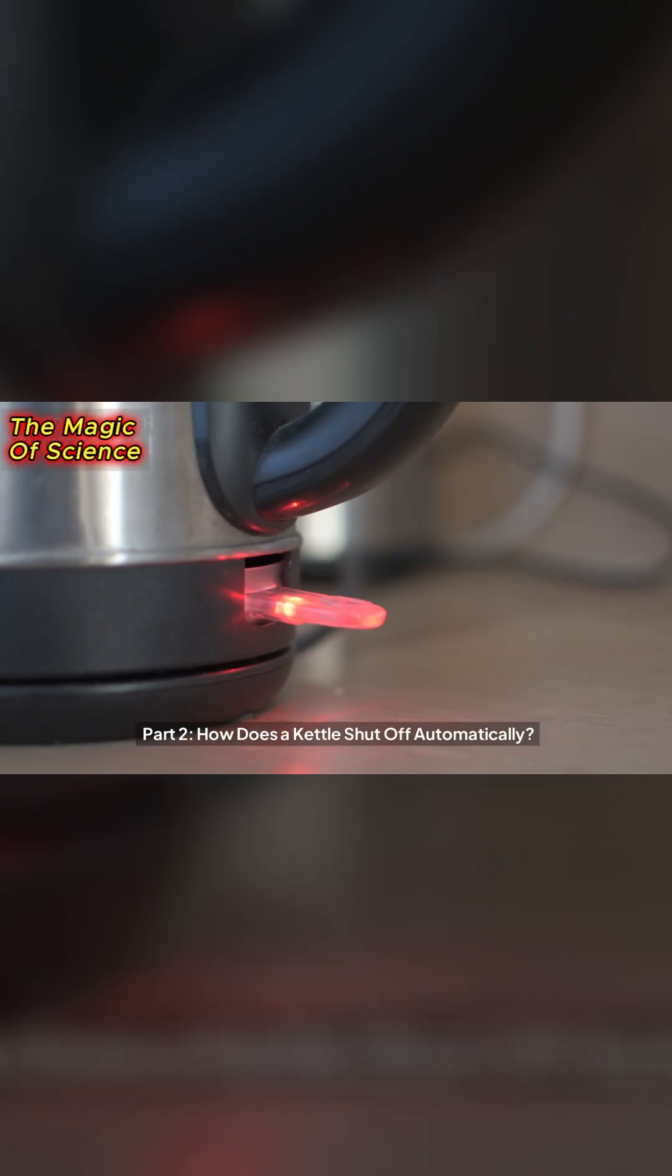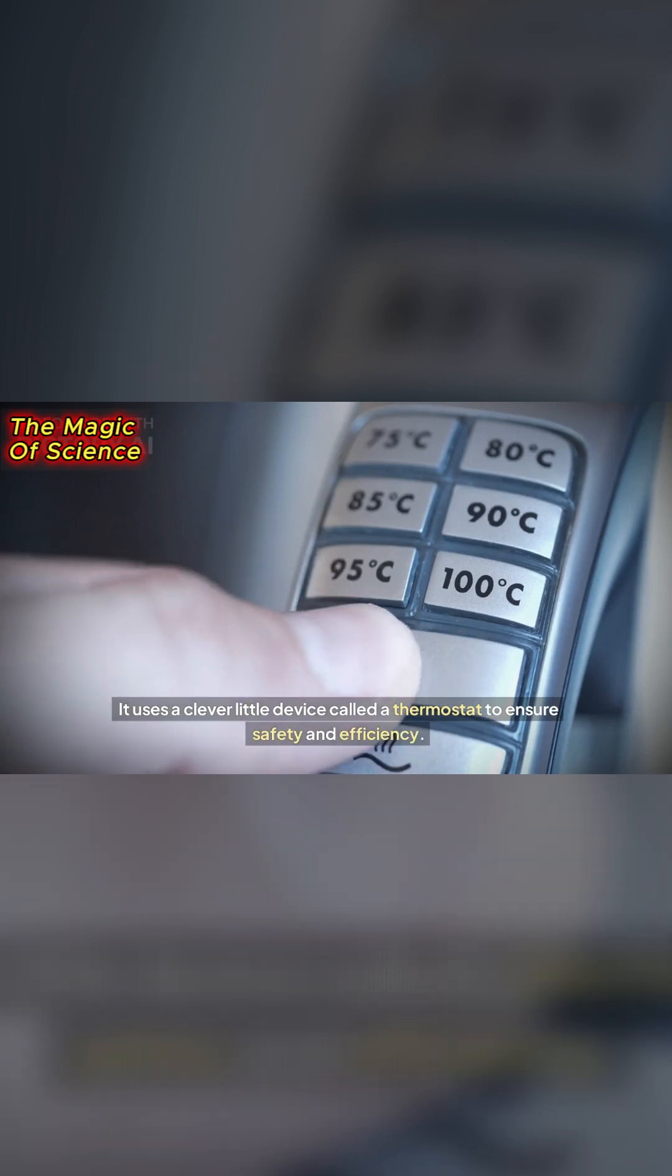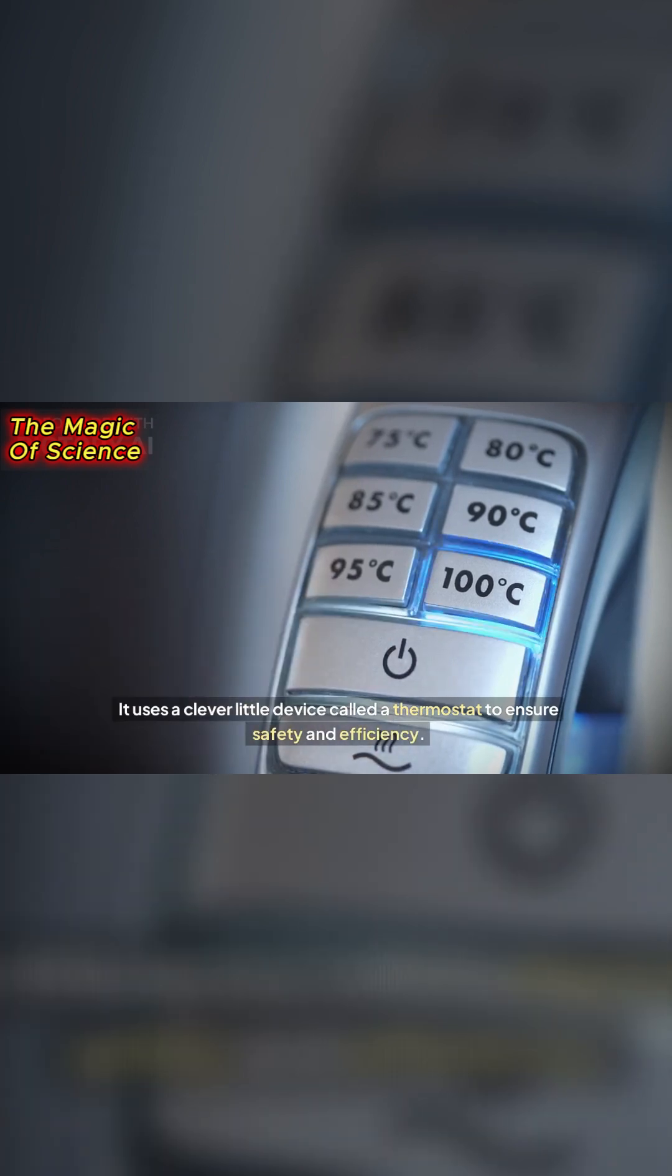Part 2. How does a kettle shut off automatically? This is where the kettle gets smart. It uses a clever little device called a thermostat to ensure safety and efficiency.